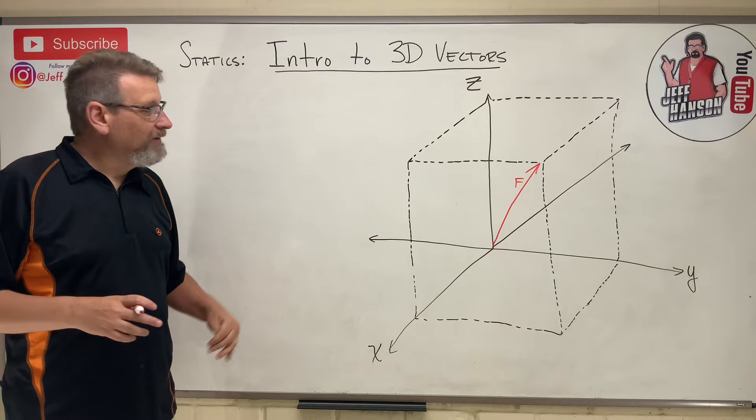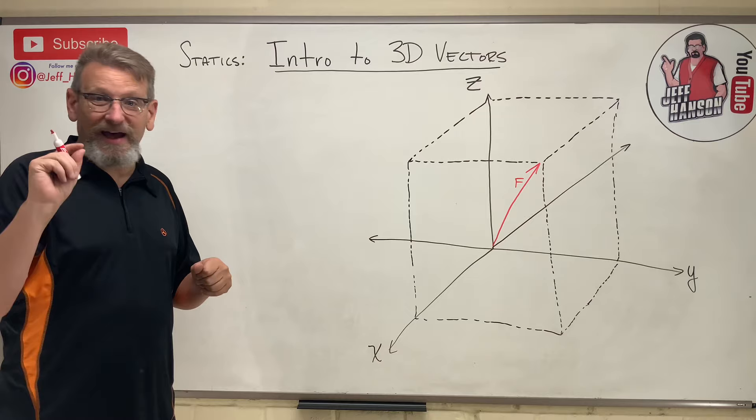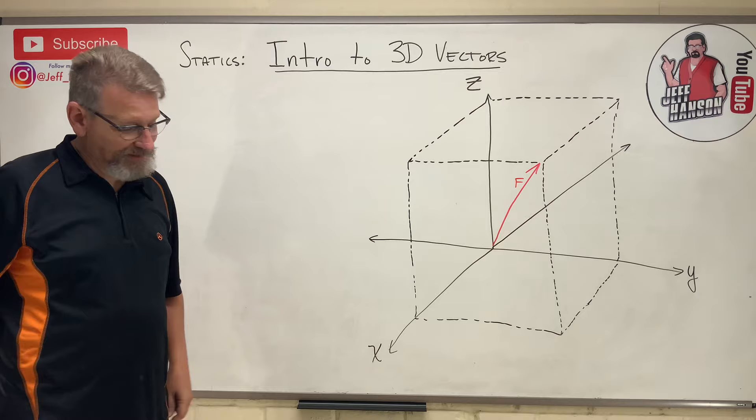Because if I can take a 3D vector and break it into i, j, and k, then I can add up a hundred of them — add all the i's together, add all the j's together, all the k's together. So everything I'm going to be doing in the next couple videos is showing you how to take a 3D vector and make it into i-hat, j-hat, k-hat. That's it. Don't think this is going to be hard — it's not hard.